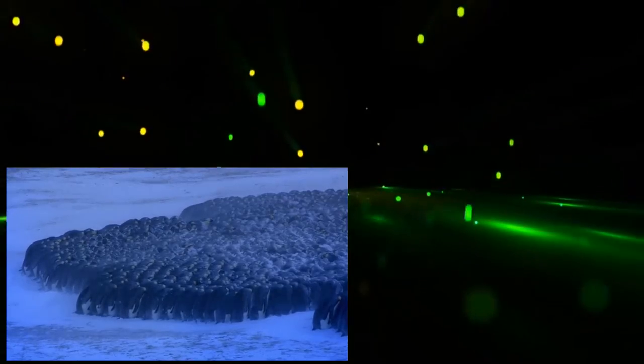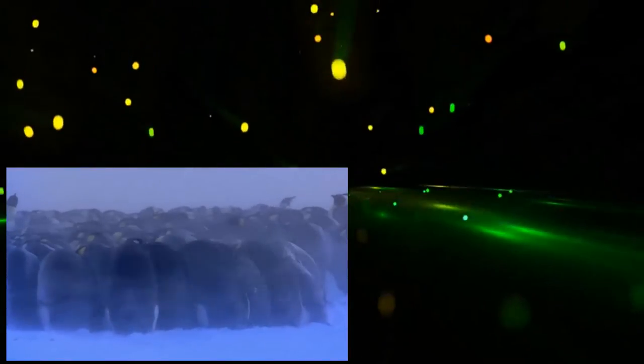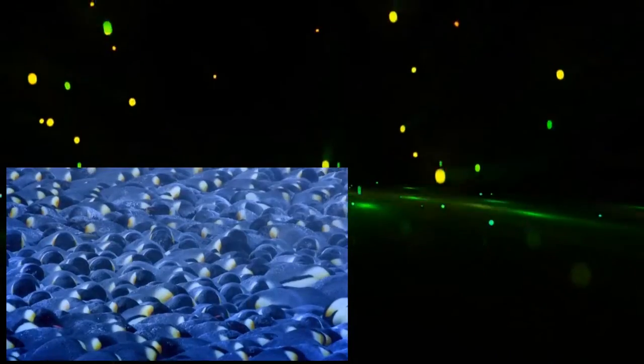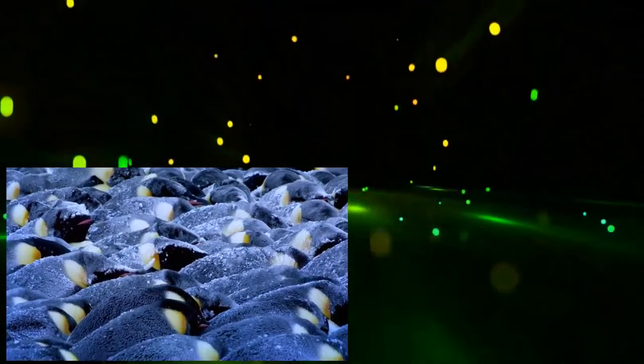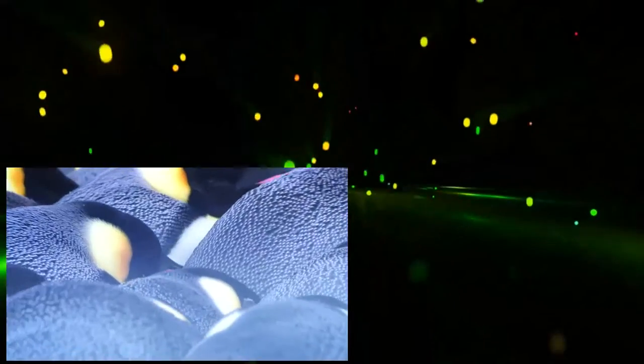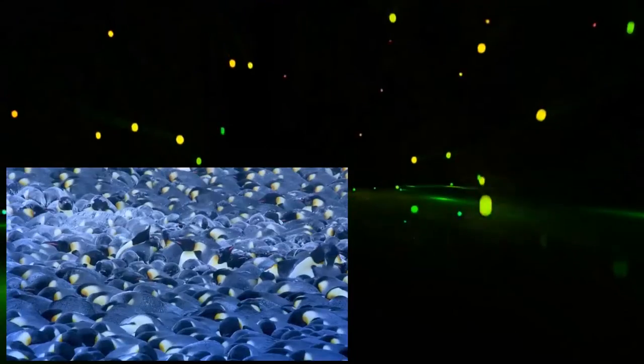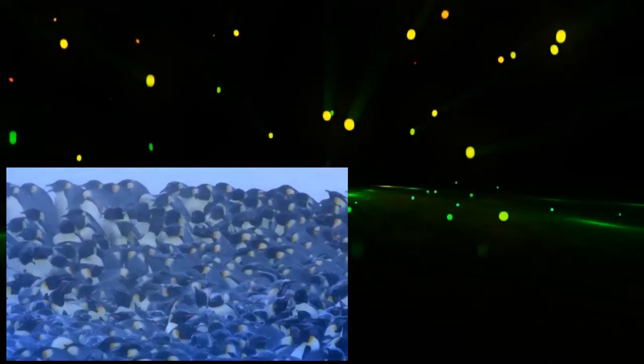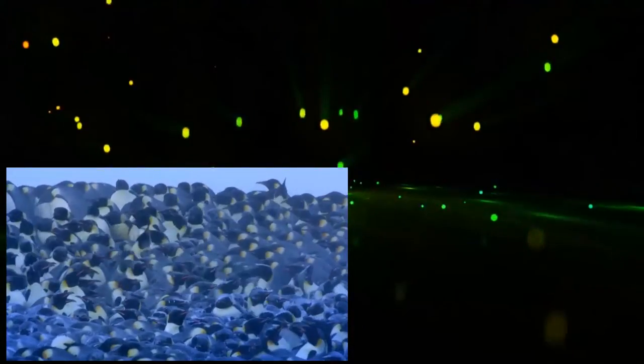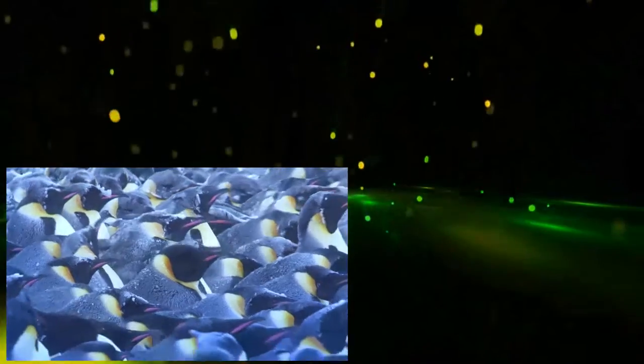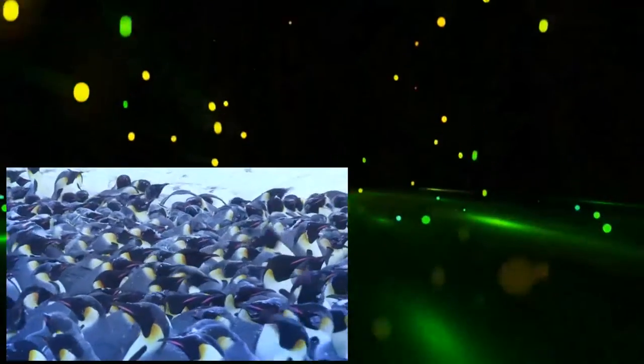While those in the centre are warm and protected, those on the outside are still struggling. To share the heat around, the penguins take tiny steps to change position. Waves of movement ripple through the huddle, giving everyone a chance to have a go in the centre. The huddle is so efficient, penguins in the inner core can even overheat. As these penguins try to cool down, the colony starts to break up. The collapse acts as a release valve, shedding excess heat.